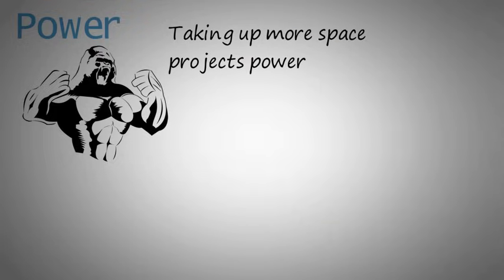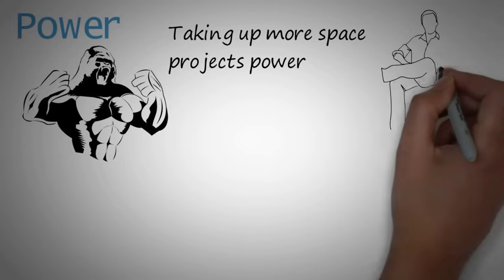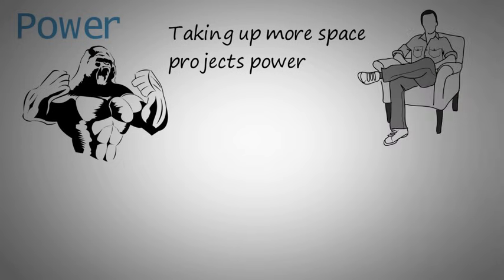It turns out, alpha humans do the same thing. They sit on one chair, they put their arm on the second, and put their feet on the desk. Since you probably won't have three chairs around you all the time, here's something else you can try.